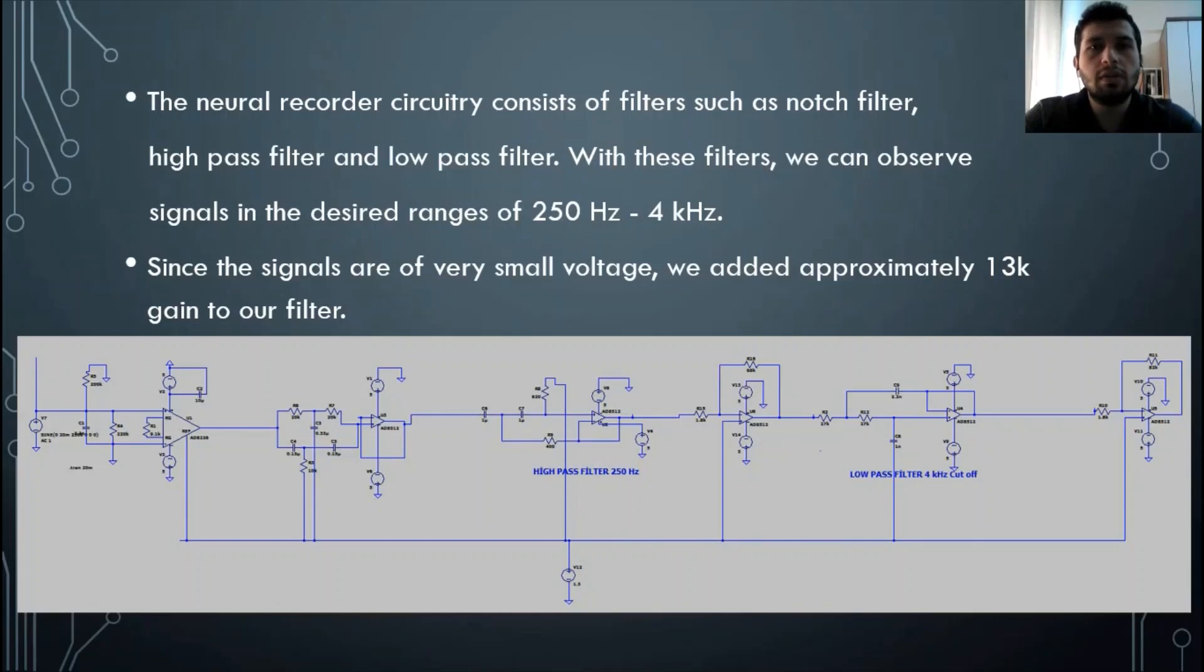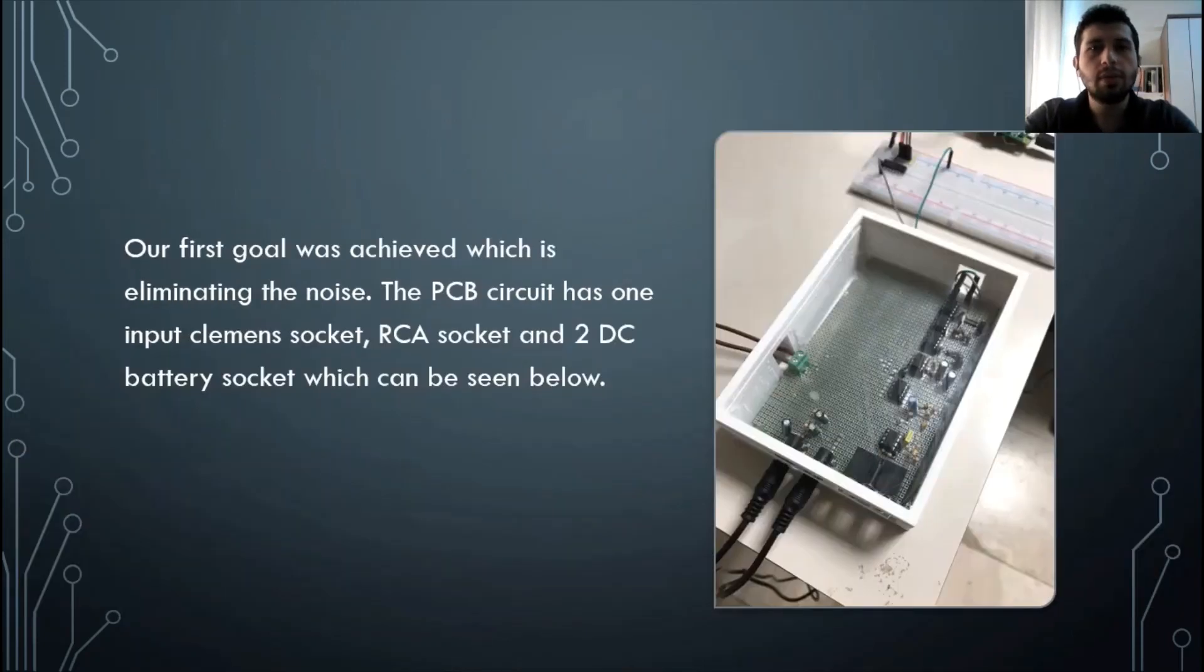I am Ertuğrul Çiçek and I will continue from here. Since the frequency ranges requested from us are from 250 Hz to 4 kHz, we designed a circuit operating in this range. At the same time, we designed a notch filter at 50 Hz and suppressed the noise from the transmission lines. The neural signals are very low signals, so we designed the circuit with a certain gain at 25 Hz. We designed a PCB circuit so that low power signals are not affected by noise.